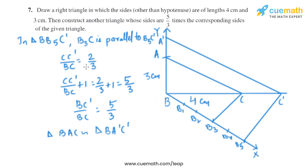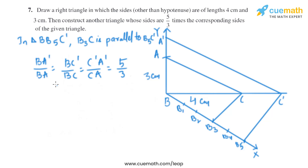Now let's do the justification of this construction. In triangle BB5C', B3C is parallel to B5C', so we get CC'/BC = 2/3. Then we add 1 to both sides and we get BC'/BC = 5/3. Triangle BAC is similar to triangle BA'C' by AAA similarity criteria. So the corresponding sides are proportional: BA'/BA = BC'/BC = C'A'/CA = 5/3.